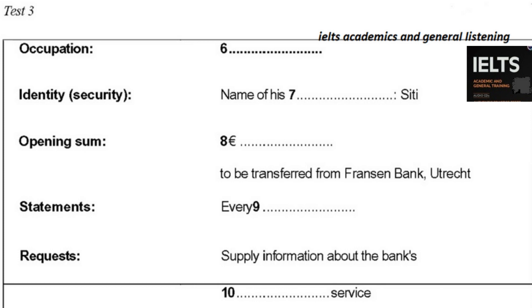And your occupation? Well, I'm in Britain as a project manager, but that's not my main job — I'm an engineer by profession. I see, I think I'll put that then, it's shorter. Now we usually ask for a piece of information we can use to check your identity for security reasons, if you phone us. Like my wife's first name? Mother's might be better — it's less likely to be known. Okay, hers is Siti — S-I-T-I. It's Indonesian. Fine.